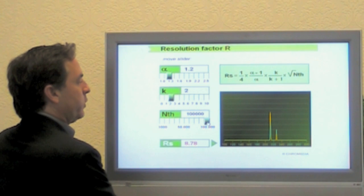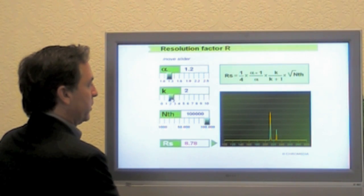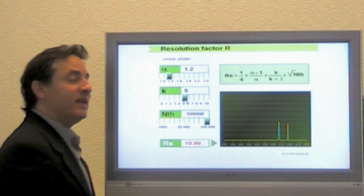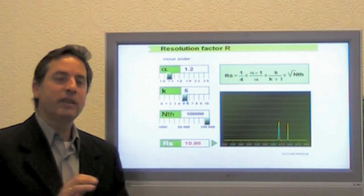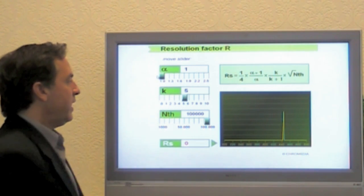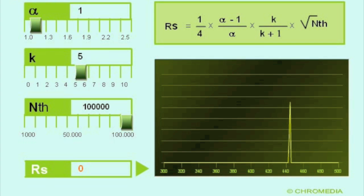Let's say I've got the world's greatest column, 100,000 theoretical plates. I've got a capacity factor of 5, I've got plenty of interaction with the column. But let's say that interaction is not the right interaction, so my selectivity is 1. Again, we'll see a very skinny peak, well retained, but no separation.